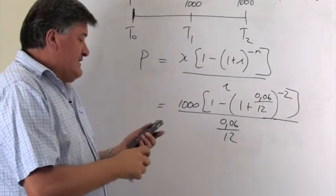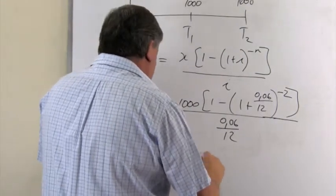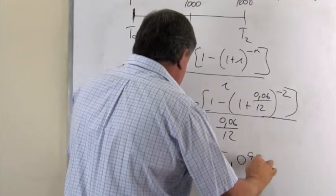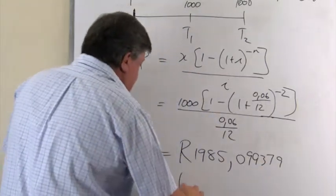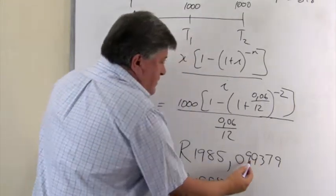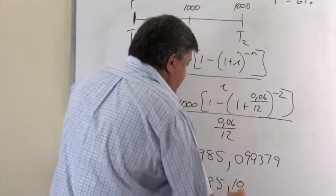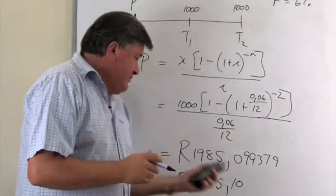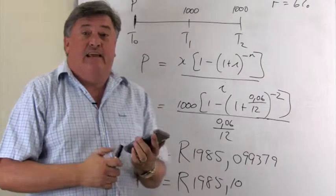And then my answer was, or at this point in time, is 1,985 comma 0,9,3,7,9. If I put down all the decimals, we round it off to two decimals. And because it is a 9, that becomes a 10. So, you will agree with me, that is basically 0.99 cents, which is very close to 10 cents. So, 1,985 rand and 10 cents.